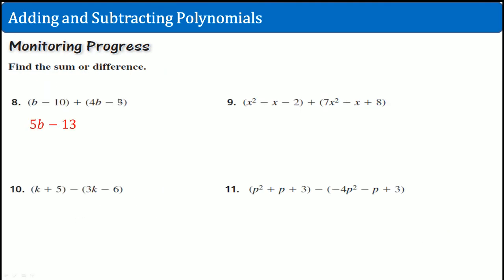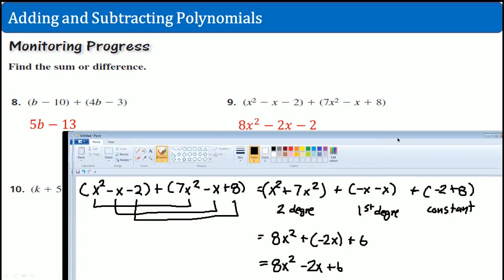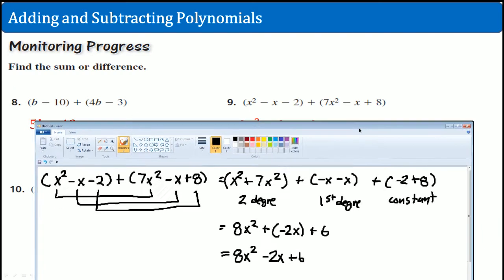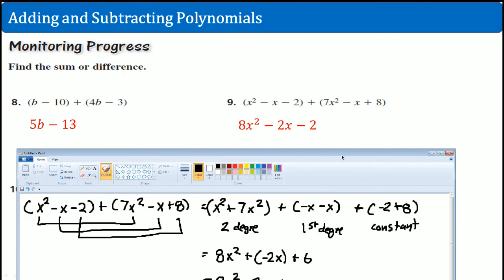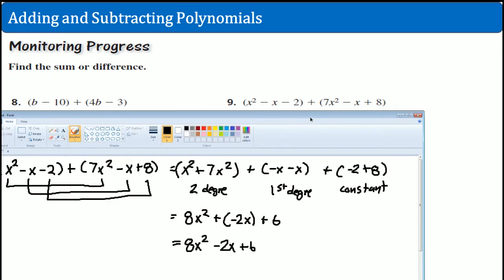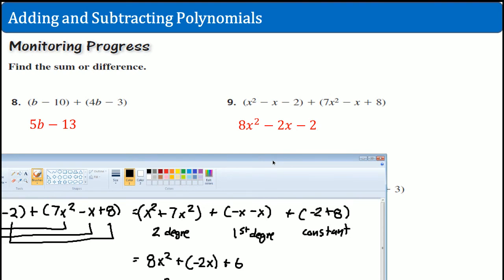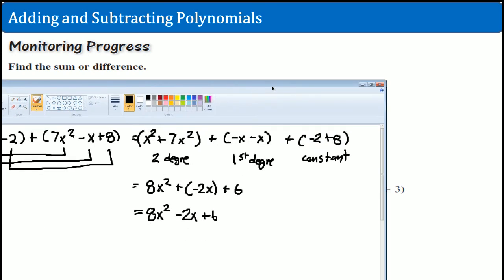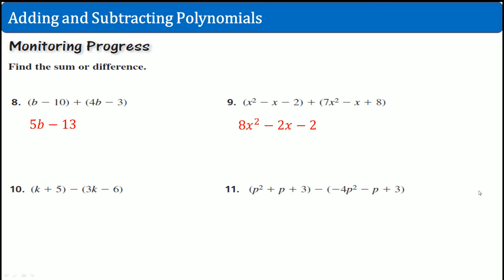Let's see if we are correct. My answer up there shows negative 2, but the correct answer is a plus 6. So the answer should be 8x squared minus 2x plus 6 — this should be a plus 6. Good.